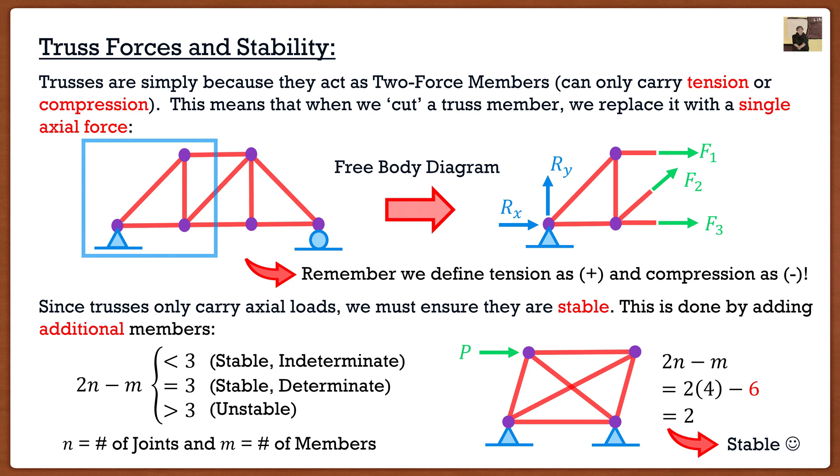Now you guys are saying, what about real life? Well, in real life, we like to have indeterminate things because indeterminate is basically backup. If I have one of my members that fail, well, take it away, we still have a stable truss. Now, if I had a stable but determinate member and one of the members failed, well, then I go into that unstable category. So I like to have indeterminate members because it provides us some sort of backup in case things go wrong.